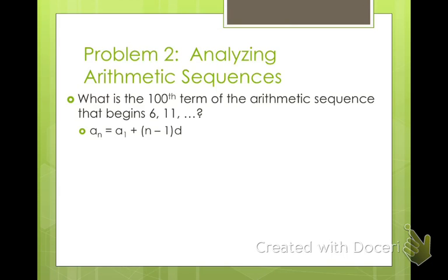Okay, we also have this handy-dandy formula. So a sub n, which means to find any term, is a sub 1, your first term, plus whatever number term you're looking for, minus 1, times your common difference. So if we're looking for the 100th term, our first term is 6. The term we're looking for is 100, and our common difference is 5. You just put each one of those in, and then you simplify. So 99 times 5 plus 6 is 501. So our 100th term in this sequence would be 501.